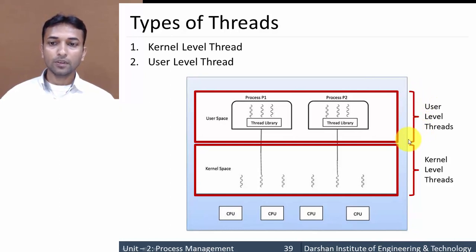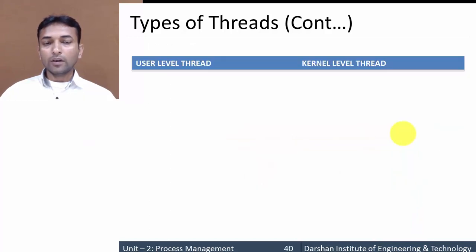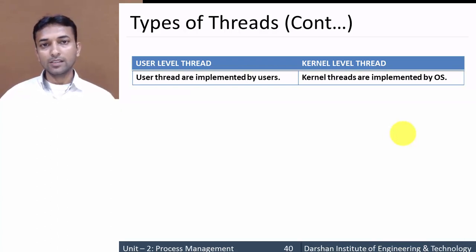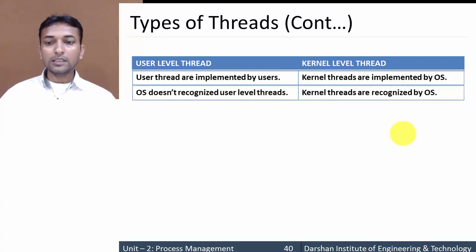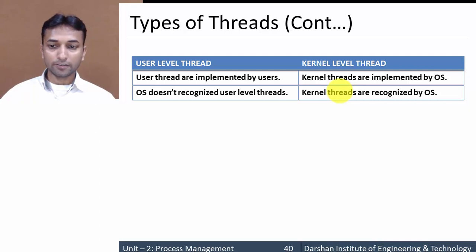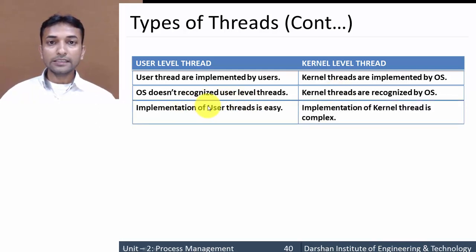Now let us compare user level threads and kernel level threads. First, user level threads are implemented by the user, whereas kernel level threads are implemented by the operating system or kernel. The operating system does not recognize user level threads because they are created by the user, not the OS, whereas kernel level threads are recognized by the OS. Implementation of user level threads is easier compared to kernel level threads.